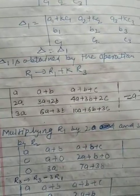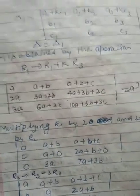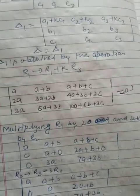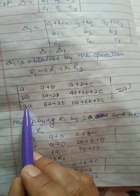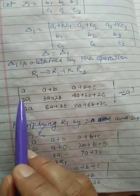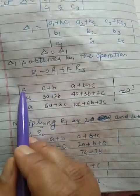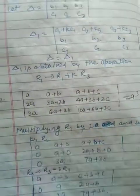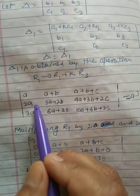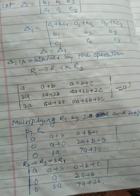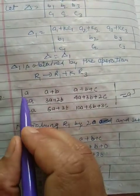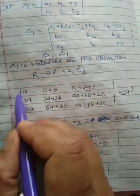In this one I have a, 2a, 3a in the first column. If I multiply the first row by 2a and then subtract from the second row, it will become zero. So now I have two zeros in the first column.